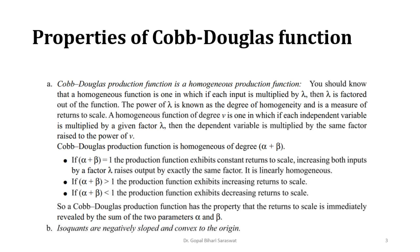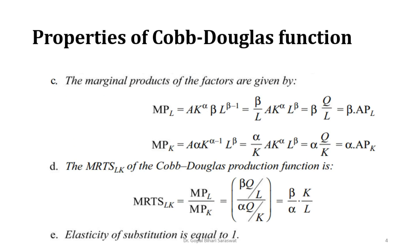The second property is that isoquants are negatively sloped and convex to the origin. Further, the marginal products of production factors are calculated using the standard formula. Additionally, the elasticity of substitution is equal to 1, which requires alpha plus beta to equal 1. These are the key properties of the Cobb-Douglas production function.